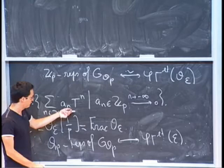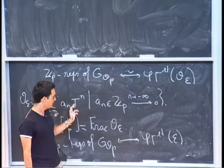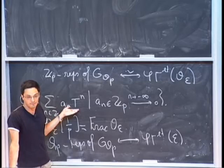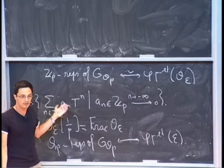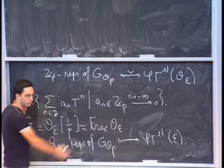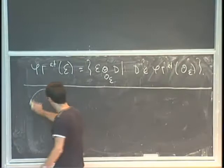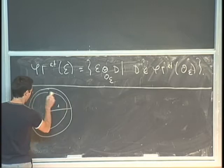I already mentioned this Robba ring, and I already told you yesterday that the goal of this thing is to classify representations in terms of some p-adic analytic objects. Here, you have power series which do not converge anywhere in principle, because I impose the condition that the coefficients should go to zero when n goes to negative infinity, but I didn't say anything about their behavior at infinity. So for instance, I cannot just evaluate this function at any value in principle. If you try to compute f(1), you get nonsense, because a_n may not go to zero as n goes to infinity.